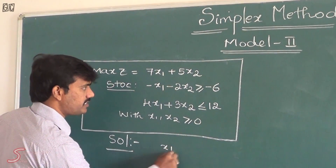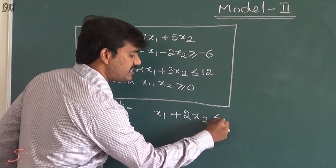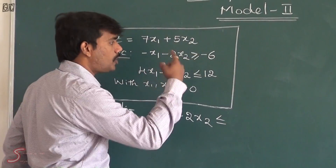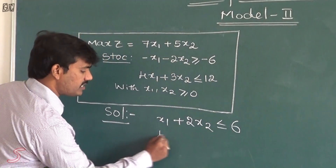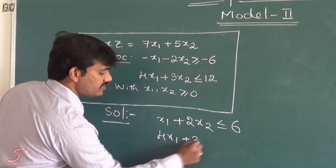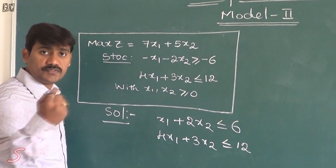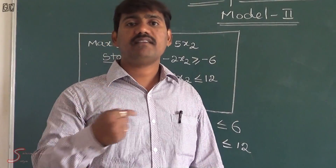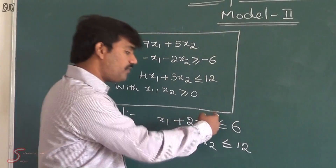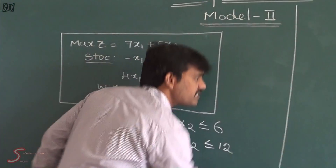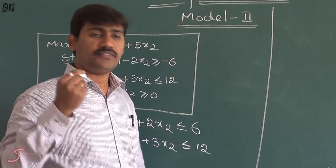First of all, we are going to multiply by minus on the first constraint to make this entire constraint in the form of less than or equal to type. So minus into minus x1 gives plus x1. Minus into minus 2x2 gives plus 2x2. The inequality will become less than or equal to minus 6. When we multiply by minus, minus into 6 is obviously plus 6. Then the second constraint is 4x1 plus 3x2 less than or equal to 12. Now the next step is to make these inequalities into equalities by introducing slack variables. For constraints in the form of less than or equal to type, we introduce a slack variable to make all constraints in the form of equality.